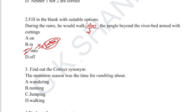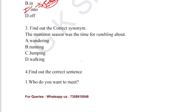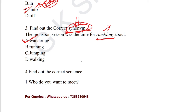Question number 3: find out the correct synonym. 'Monsoon season was the time for rambling about.' The term 'rambling' means wandering — walking here and there. Option A, 'wandering', is the correct answer for question number 3.